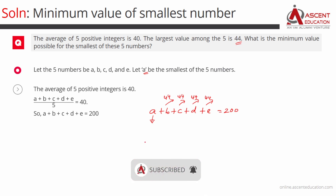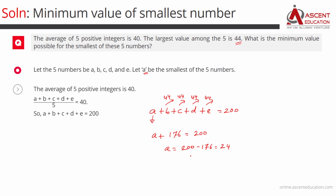That is the case where you are assigning the maximum possible value to the remaining 4. So A plus 44 plus 44 plus 44 plus 44 equals 176, and that is equal to 200. So A equals 200 minus 176, which is equal to 24. The minimum value possible for the smallest of these 5 numbers is 24.